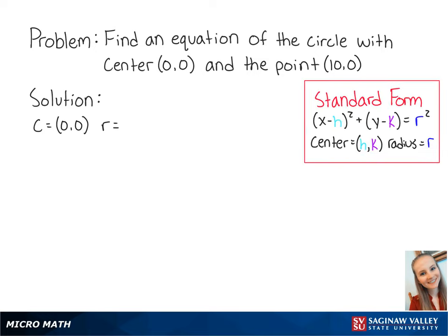Standard form shows us that the center of the circle is at (h,k). So here, our h is equal to 0 and k is also equal to 0.